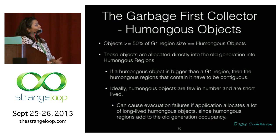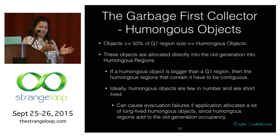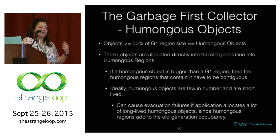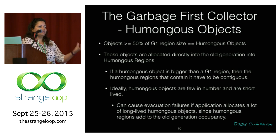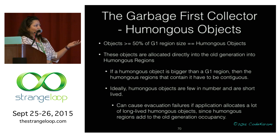Humongous objects should ideally be short-lived and few in number, but sometimes that's not the case, causing evacuation failures. Long-lived humongous objects add to old generation occupancy, triggering the marking threshold and concurrent cycle. But during cleanup, they can't be taken out, and mixed GCs don't help because there's no point in moving live, large chunky objects — there's no reclamation. So you're stuck with triggered marking cycles that aren't reclaiming much, causing evacuation failures.